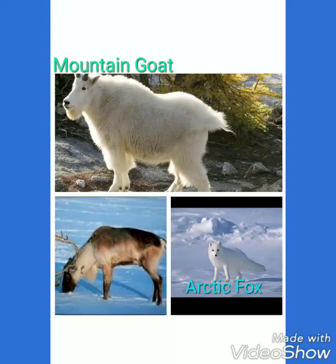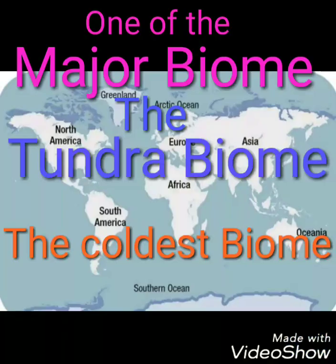The animals which are adapted to the tundra biome have special features in their bodies. The animals of the tundra region have thick fur and extra layers of fat to keep them insulated.